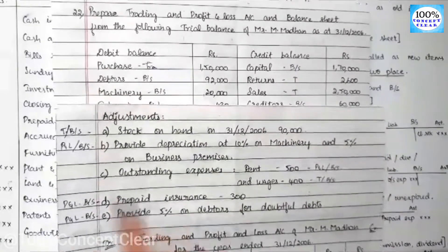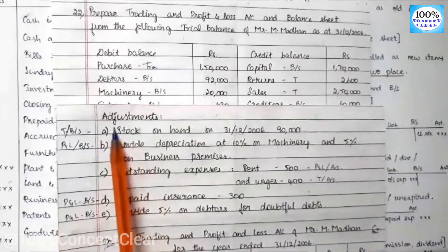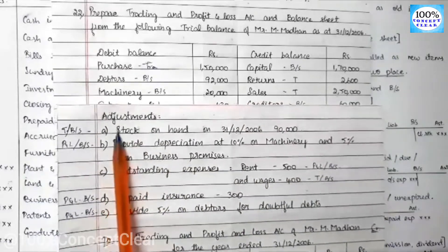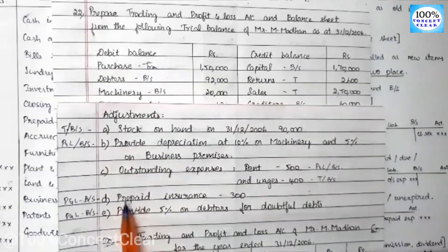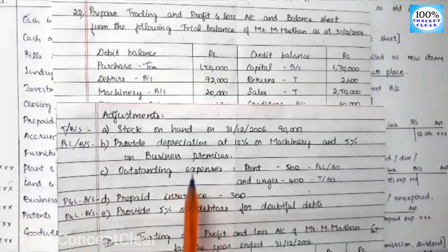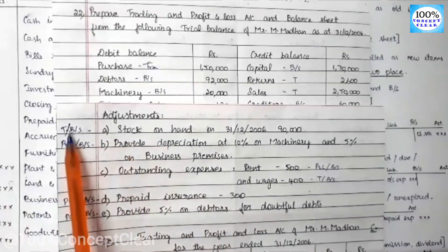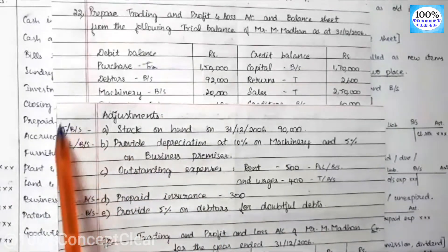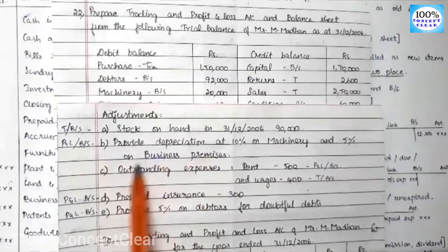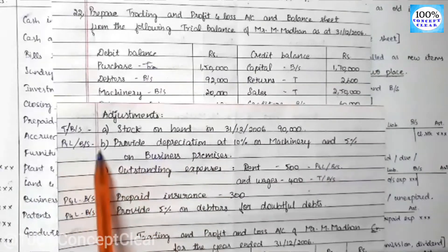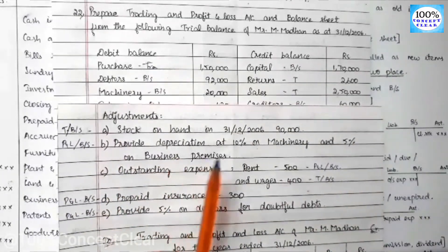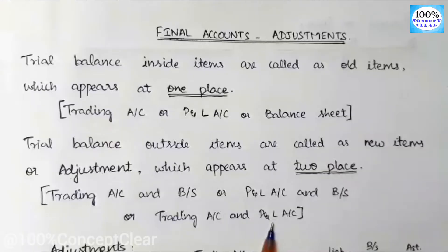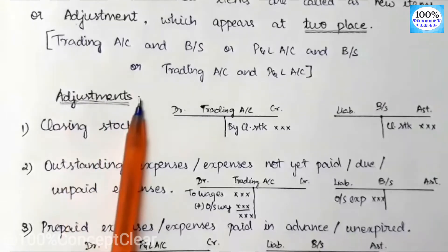In a final accounts sum, there are a few adjustments — there are five adjustments. In the five adjustments, there are two types. The first adjustment type is trading and balance sheet. The second one is P&L and balance sheet. Let's see the adjustment items.